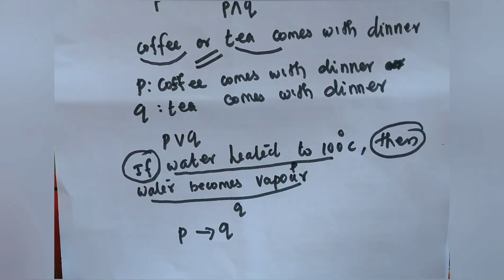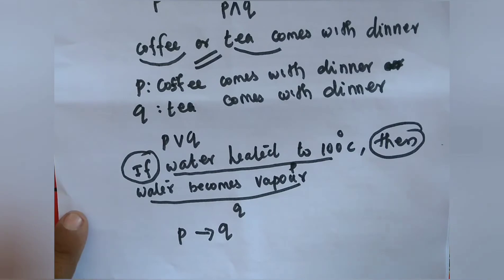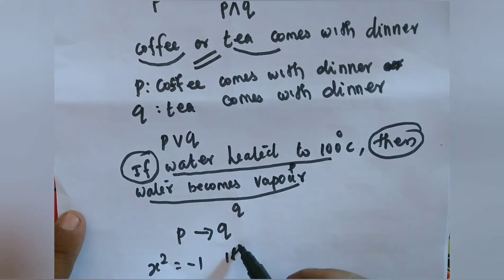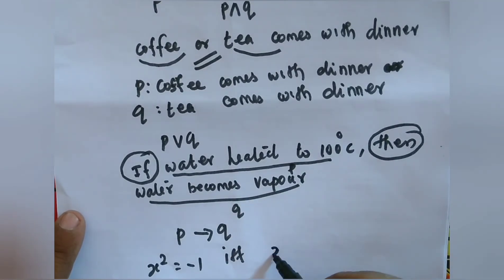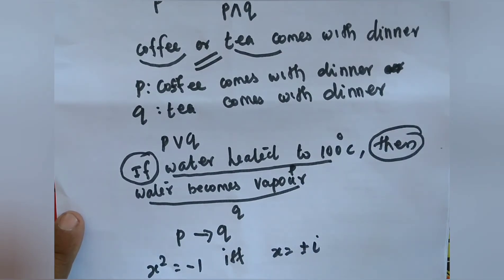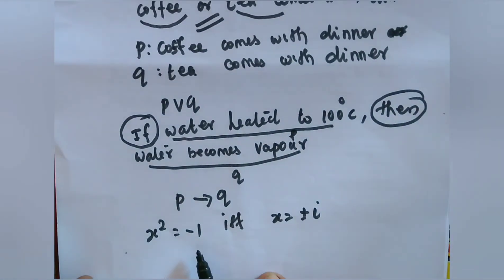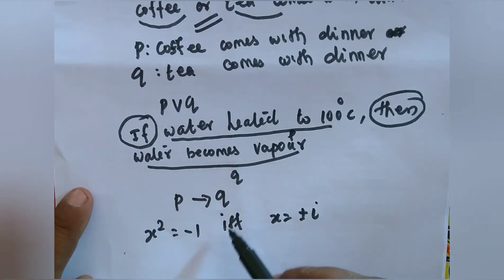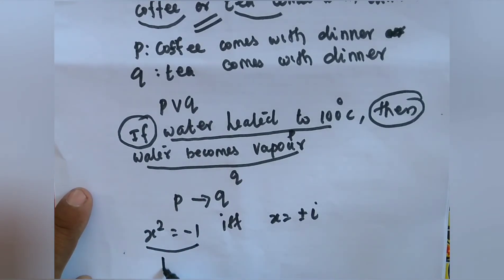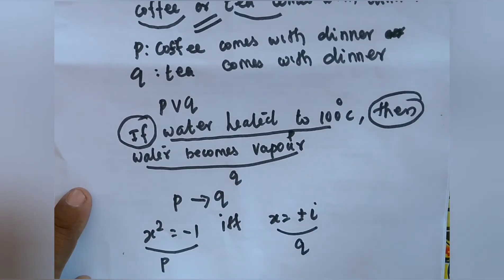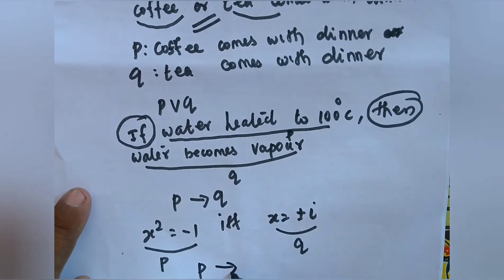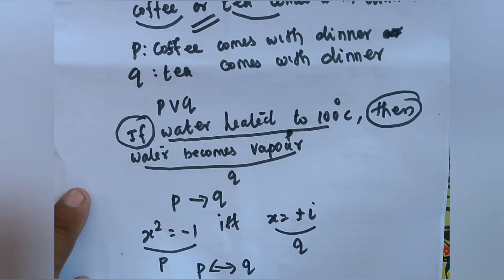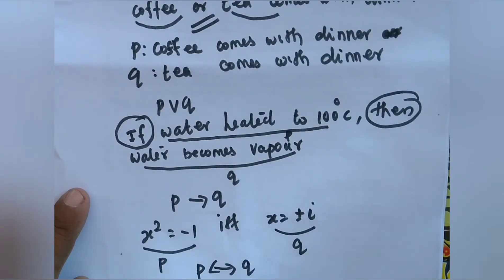The next example: 'x² = -1 if and only if x = ±i.' This sentence is connected with 'if and only if'. We take P as 'x² = -1' and Q as 'x = ±i'. The given sentence is represented as P ↔ Q, the biconditional statement.